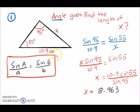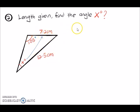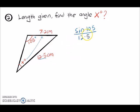For the second example, we are given a pair: 105° as the angle and 12.5 as the length. The angle we need to find is x, and its opposite side is 7.2. Substituting into the sine formula: sine 105° over 12.5 equals sine x over 7.2.